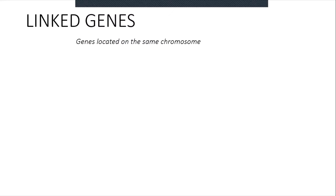So let's take a look at what happens if the genes are on the same chromosome. We call those genes linked genes. Linked genes are genes located on the same chromosome. Genes on the first chromosome are linked to each other, genes on the second chromosome are linked to each other, and genes on the third chromosome are all linked again — but genes on the third chromosome are not linked to any gene on a different chromosome. This situation is called linkage.